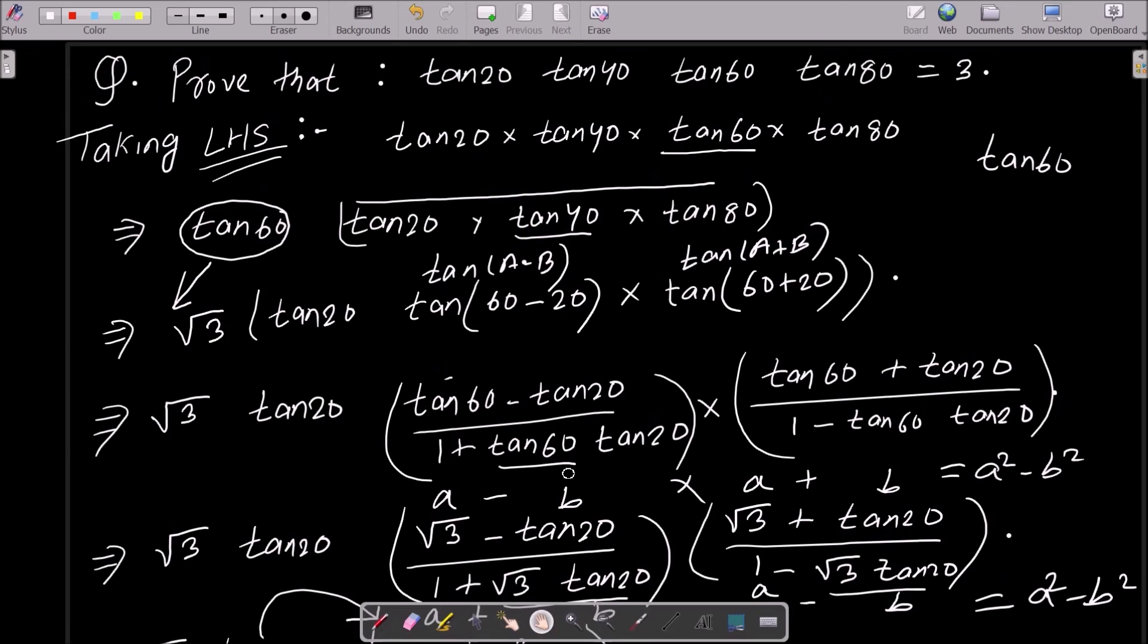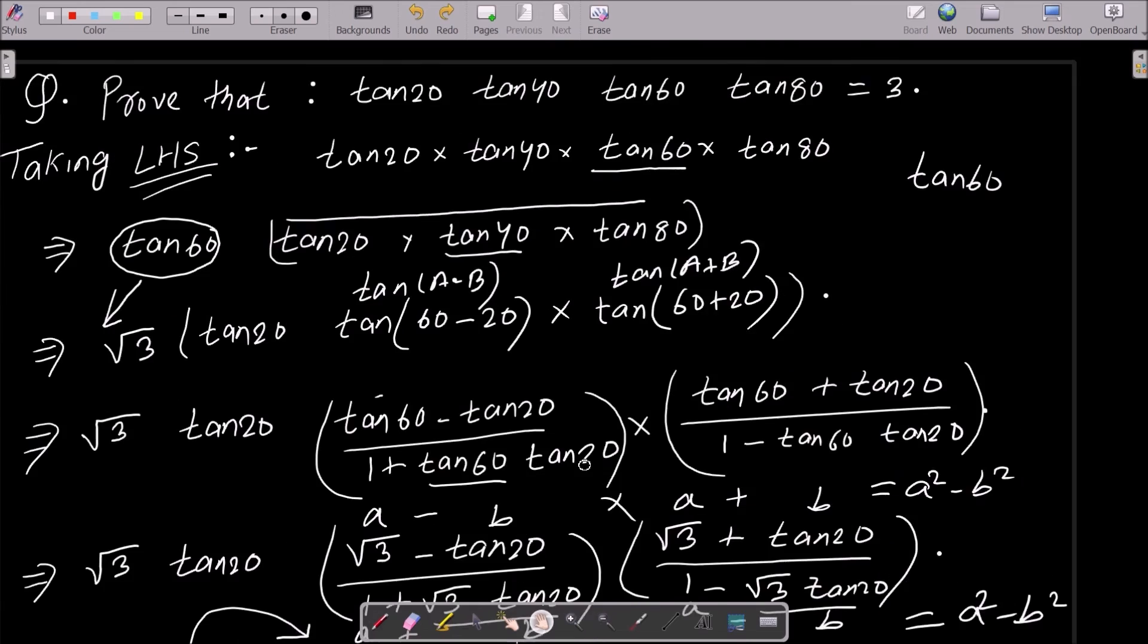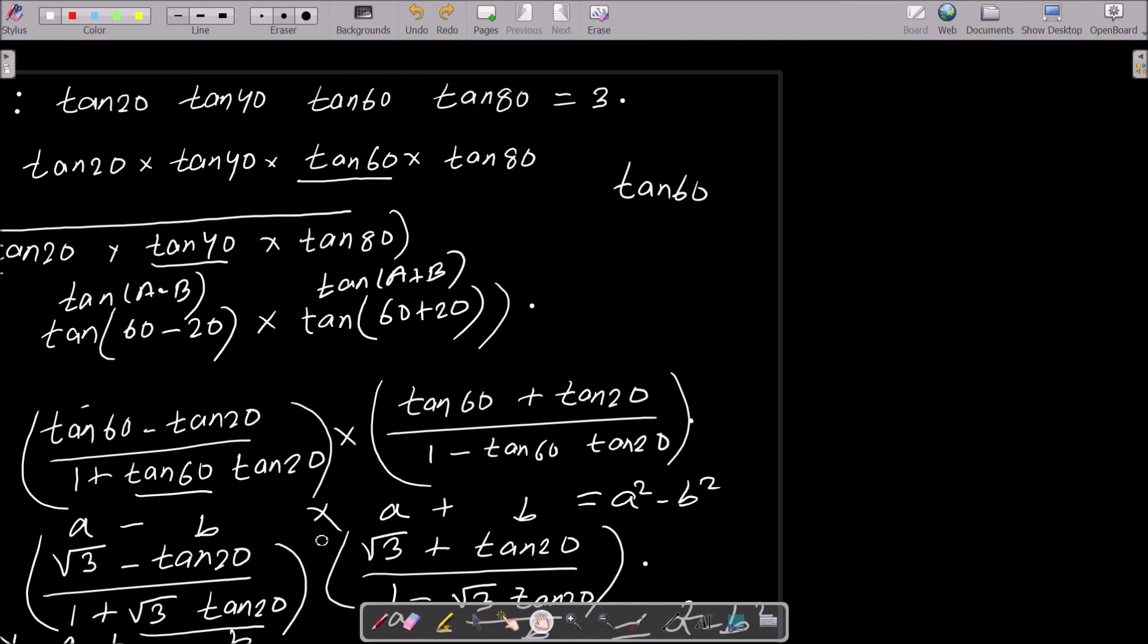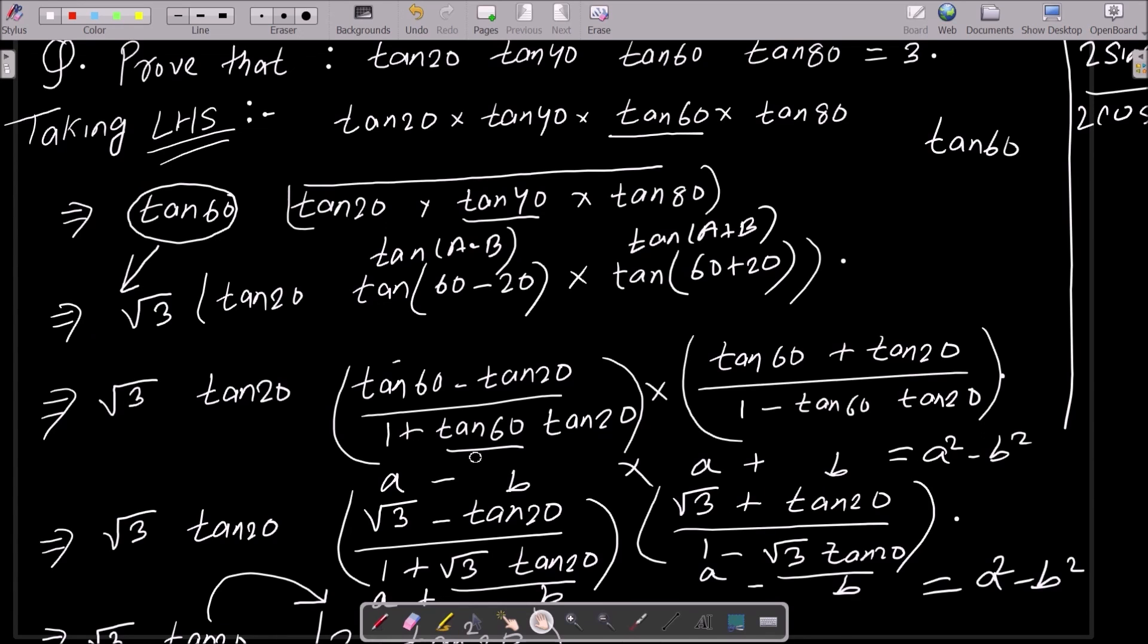This is the simplest way we can achieve the output. In many books you can get this answer by using a lengthy process like sin20° sin40° sin60° sin80° and cos20° cos40° cos60° cos80°, they multiply and do long calculations. This is too lengthy, so by using this way you can easily achieve the output. I hope this video is helpful for you. Thanks for watching, see you next time.